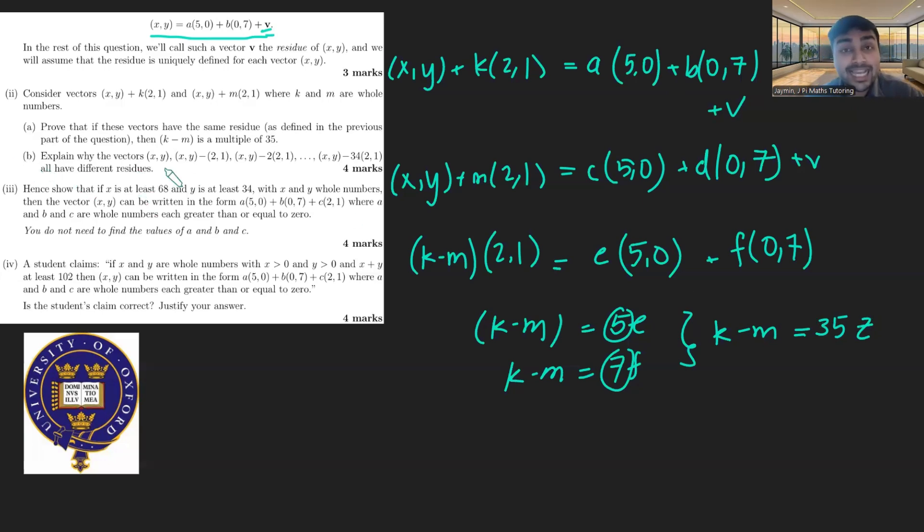Part b. Explain why the vectors (x,y), (x,y) minus (2,1), (x,y) minus 2 times (2,1), and so on, all the way up to (x,y) minus 34 times (2,1), all have different residues. This is a really nice question. We're going to essentially make an observation that they've given us a list of 35 vectors.